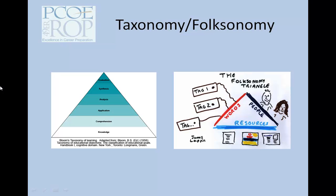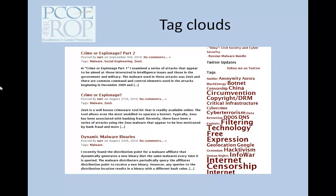A hierarchical classification is known as a taxonomy. A non-hierarchical classification system is known as a folksonomy because it's created by a crowd of ordinary people rather than by experts. Folksonomies are shown by tag clouds. A tag cloud lists the most commonly used tags on a website and shows the most common in bigger font, such as filtering technology and free expression, and shows less commonly used tags in a small font, such as data retention and exploits.